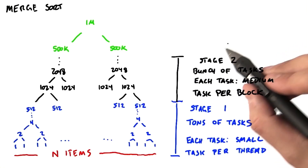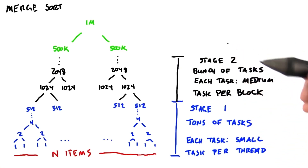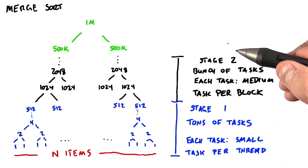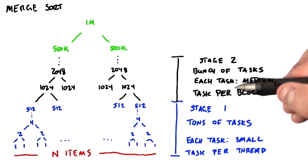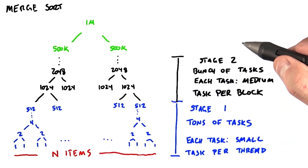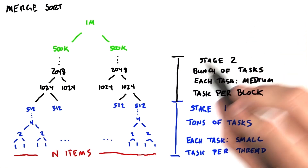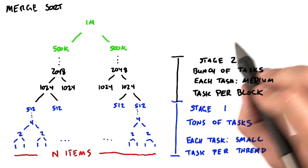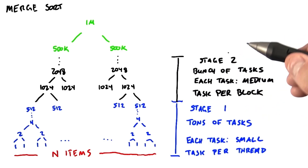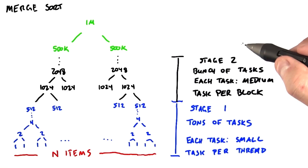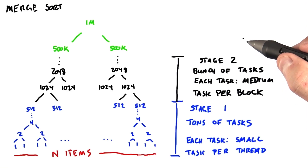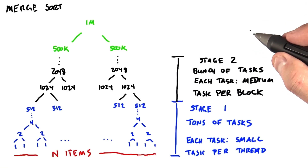Now we move on to stage two. Now we have lots of small sorted blocks, and we need to merge these small sorted blocks together. On the GPU, for these intermediate merges, we would usually assign one merge to one thread block. The obvious way to merge two sorted sequences is a serial algorithm, so let's take a closer look at the algorithm that we choose to use here.